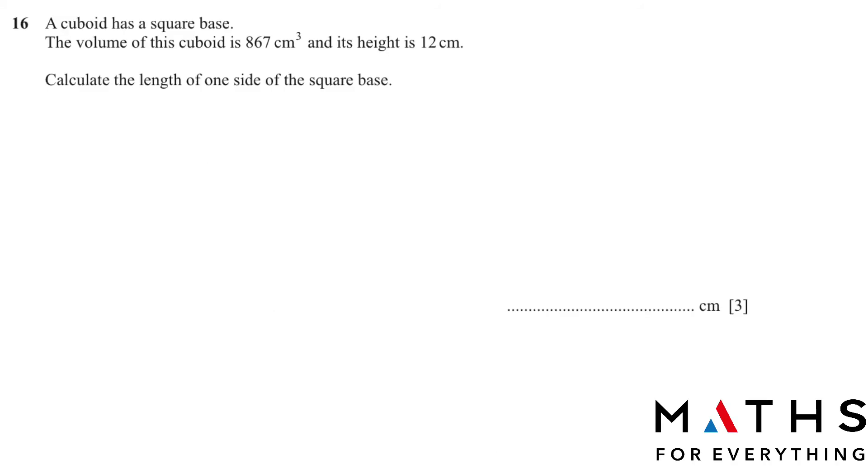Question number 16: A cuboid has a square base. The volume of this cuboid is 867 cubic centimeters. The height is 12 centimeters. Calculate the length of one side of the square base. Cuboid is a 3D shape. I will draw one. This is your base, width, and height. The height is given to us, it is 12. The base is square, it means that both the sides are going to be the same. Let's name it x and x.